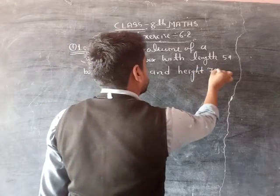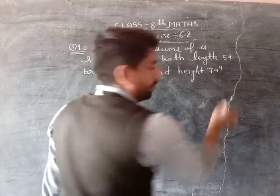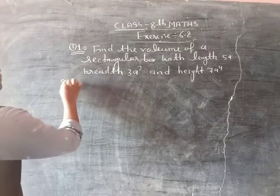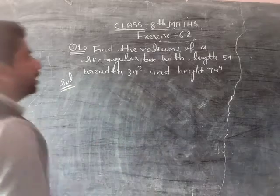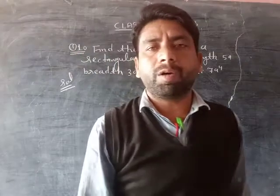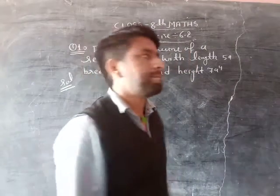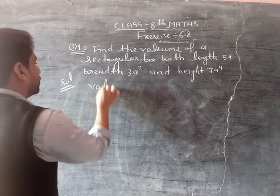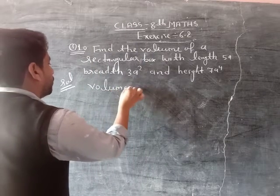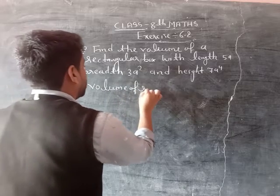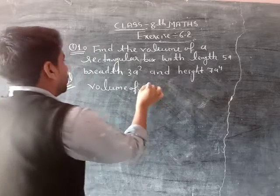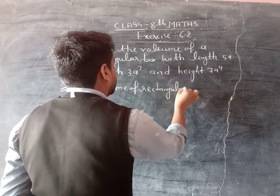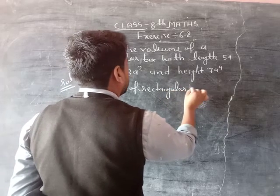We have 7a to the power of 4 for the height. Find the volume of the rectangular box. We know that the volume of a rectangular box...